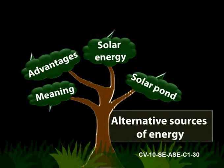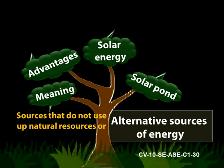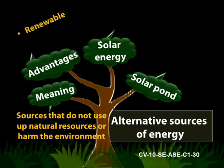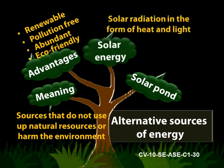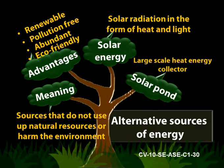You have understood the meaning of alternative sources of energy — sources that do not use up natural resources or harm the environment. The advantages of alternative sources of energy are that they are renewable, pollution-free, abundant, and eco-friendly. Solar energy is solar radiation in the form of heat and light, and the solar pond is a large-scale heat energy collector.